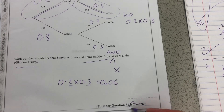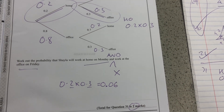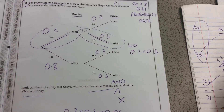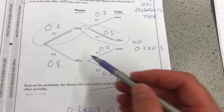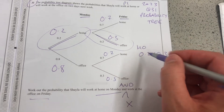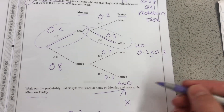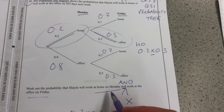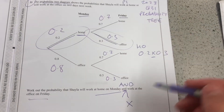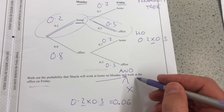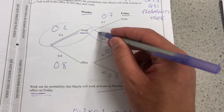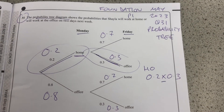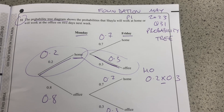That's two marks, managed to do it under two minutes. It's a nice demonstration of the probability tree diagram, knowing that the intersection is when it says the word AND and we have to multiply those cases. So home on Monday — that's there — and office on Friday — that's that one there. That's Foundation GCC probability tree diagrams.